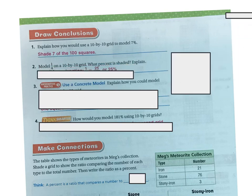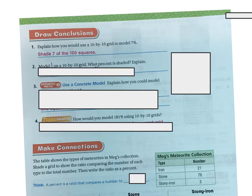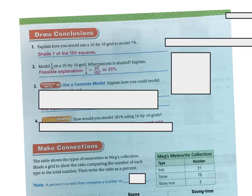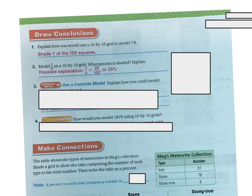The next one says model 1/4 on a 10 by 10 grid. What percentage is shaded? And explain. Well, 1/4 is the same thing as 25 over 100 or 25%.